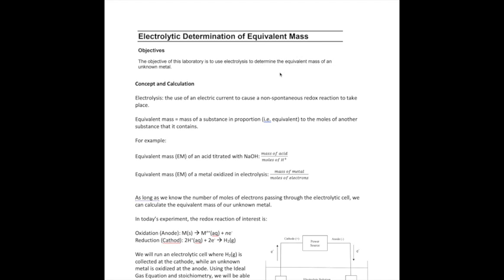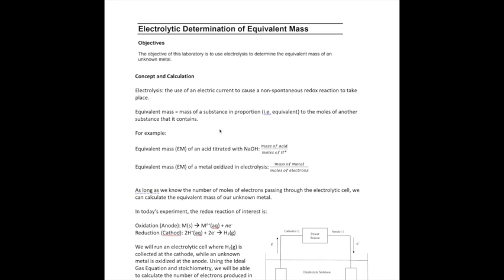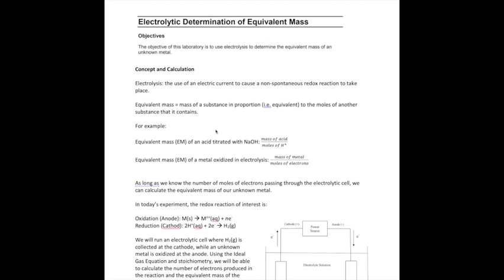The goal in this particular lab is to use the technique of electrolysis, which you learn in your electrochemistry chapter, to determine the equivalent mass of an unknown metal. Electrolysis, as you learn in lecture, is the use of an electric current to cause a non-spontaneous redox reaction to take place.